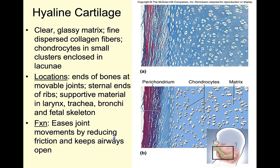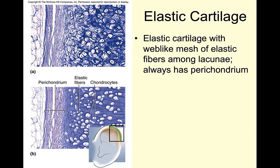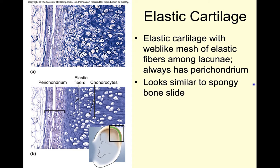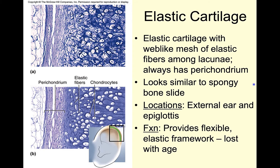This tissue reduces friction and also helps keep those airways open. Last is our elastic cartilage. As we can see in the top image, we have a web-like mesh of elastic fibers with lacunae and chondrocytes sitting within those lacunae. When you're looking at this under a microscope, it can trick you into thinking you're looking at spongy bone, so spend some time practicing these slides. We find this in our external ear and the epiglottis, and it offers some flexibility because of those elastic tissues.